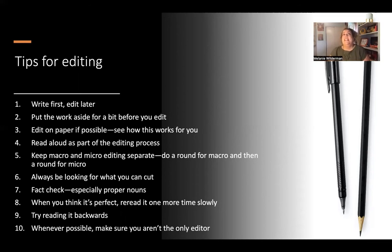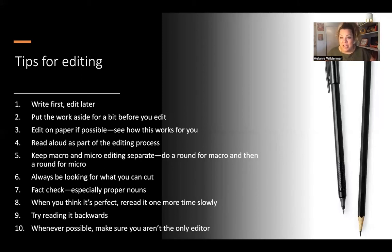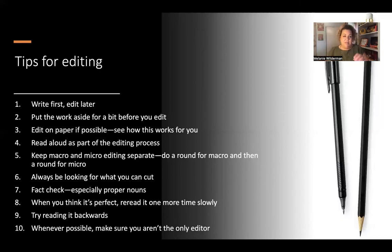Tip number four: read aloud as part of your editing process. That applies whether you're editing on paper or on screen. Read aloud especially for pieces that are going to be for broadcast — TV or radio — but even for print or online publications where people are reading and not listening, it's still so good to read aloud. It slows your brain down, makes you focus on the cadence and the rhythm. It'll help you catch mistakes, but also catch things that aren't necessarily mistakes — sentences that go on too long, too many short sentences in a row — it's going to help you with the flow of the piece.